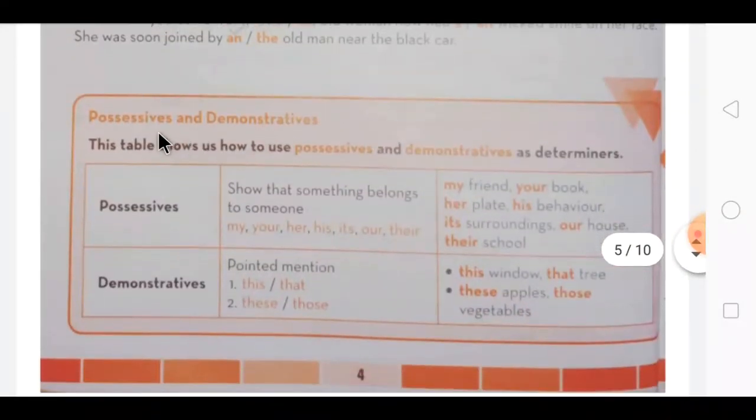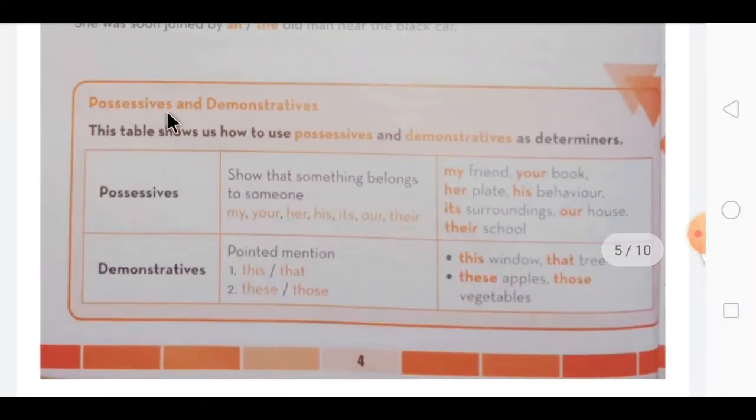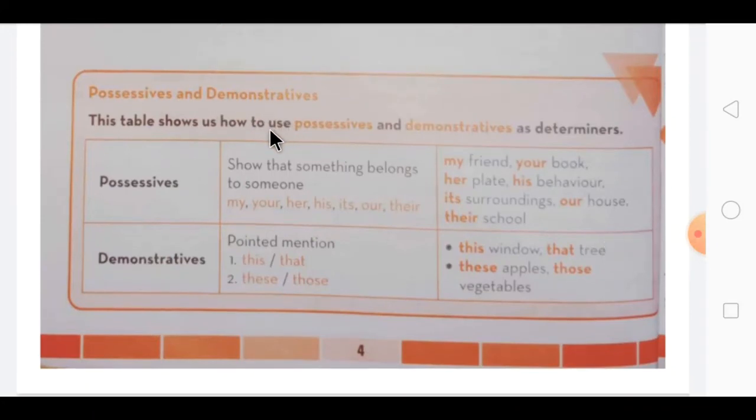And in exercise D, you have to choose the best option to complete the sentences. Where two options are given, you have to tick the correct option which is suitable for the sentence. Then our next concept, second type of determiners are possessive and demonstrative. Possessive determiners - show that something belongs to someone. Possessive by the word itself you can come to know that it shows possession. It shows whose thing it is.